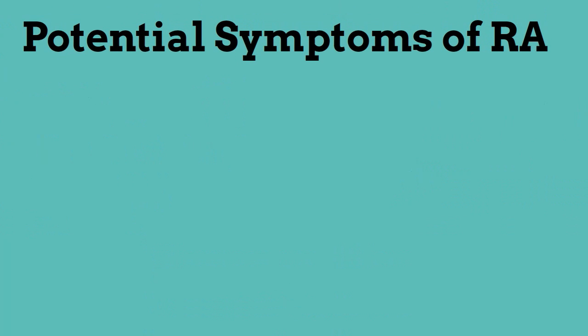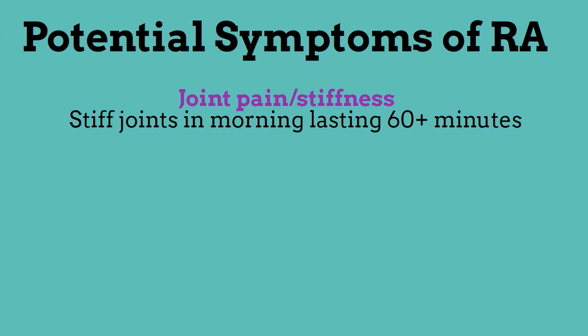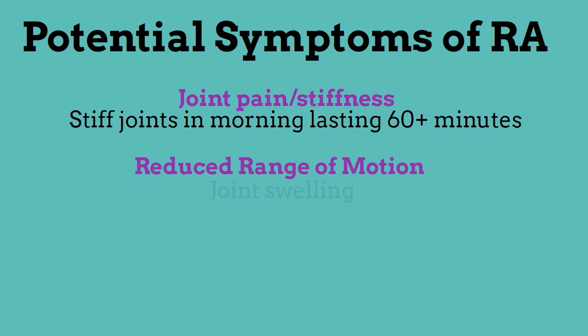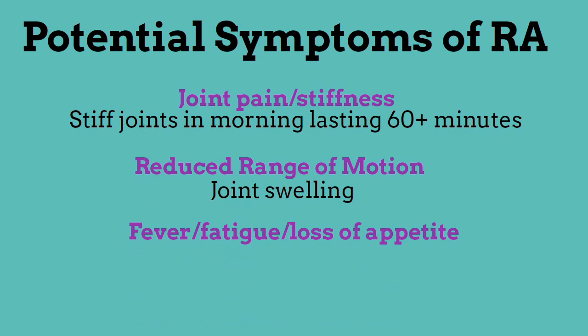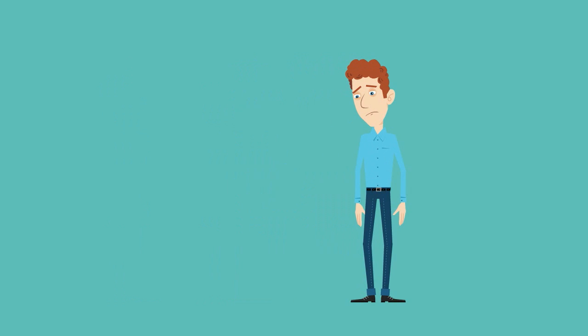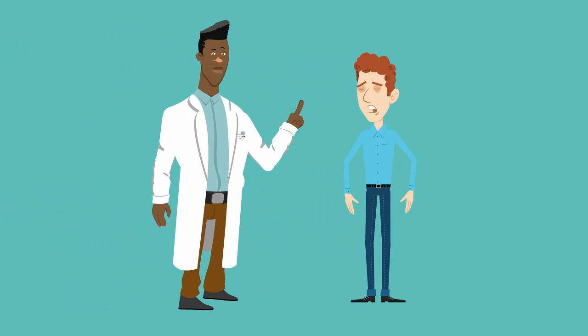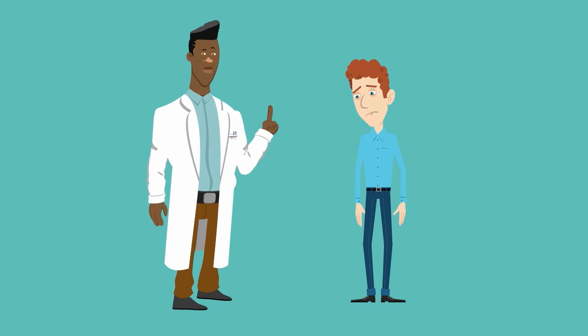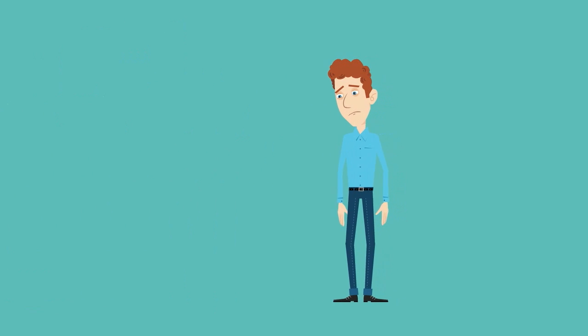Early onset of RA starts over a period of weeks to months. If you observe any of these symptoms for at least six weeks, you should see your doctor. If your family doctor suspects RA, they will refer you to a specialist.